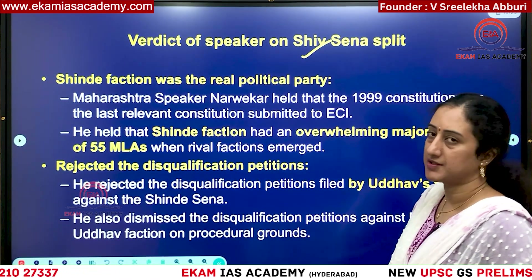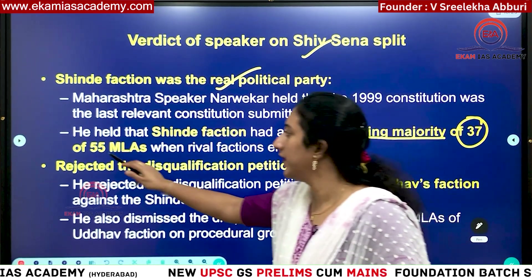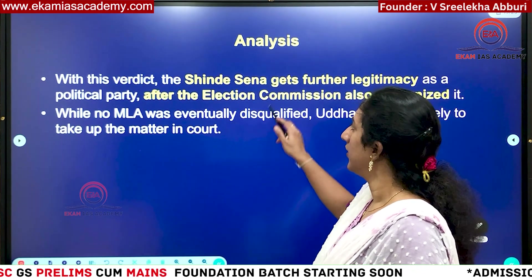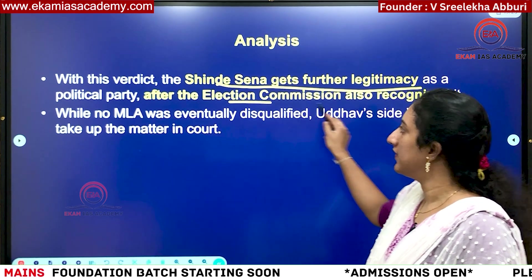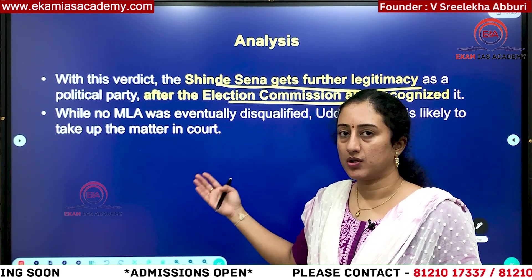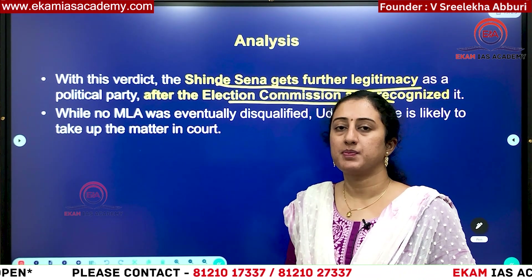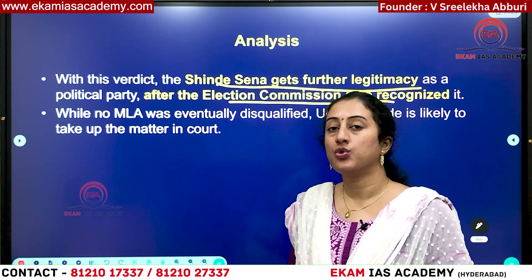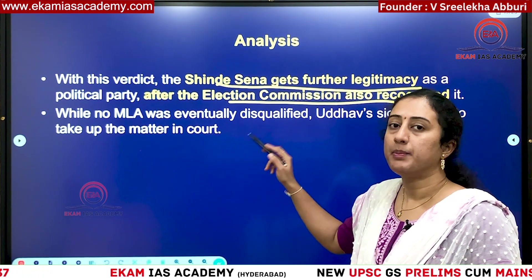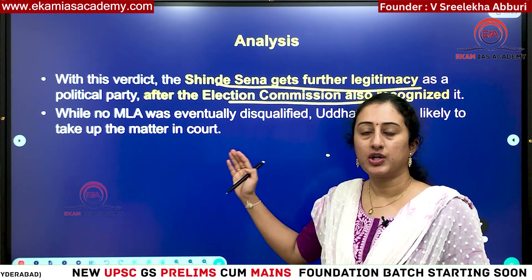The Speaker's verdict: the Speaker ruled that the Shinde faction was the real political party because it had an overwhelming majority of 37 members out of 55 MLAs, and rejected the disqualification petitions filed by the Uddhav faction. The Shinde faction is getting further legitimacy because the Election Commission of India also recognized this faction as the real Shiv Sena. The Supreme Court gave a verdict that both the speaker and the election commission are the authorities to decide which party is the actual party — the speaker deciding on disqualification and the election commission deciding on the party symbol, such as the bow and arrow symbol.